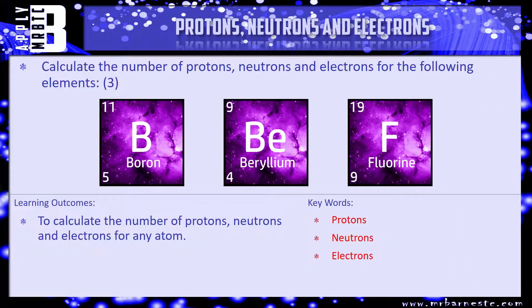Time for you guys to have a go yourself then. So I've got 3 atoms here, boron, beryllium and fluorine. I'd like you to work out the protons, neutrons and electrons for each of them. One mark for each of them being correct. So pause the video, have a go and we'll see how you've done in a minute.